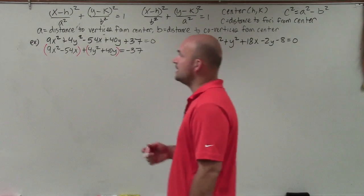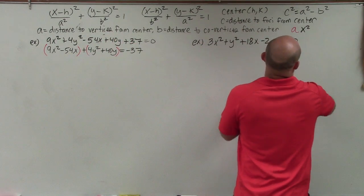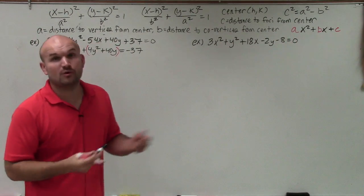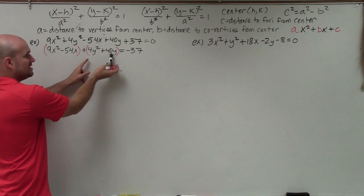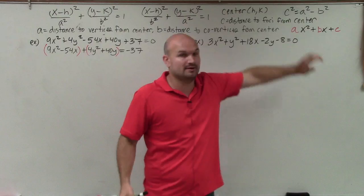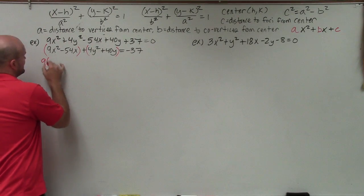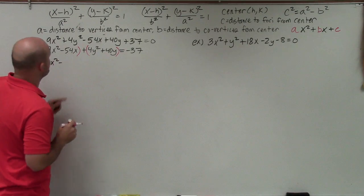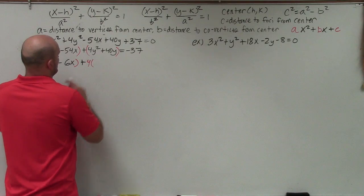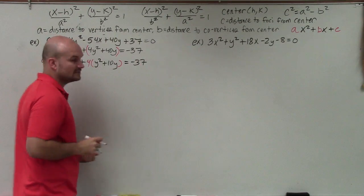Remember, for completing the square we cannot have the leading coefficient 'a' be anything other than 1 in ax² + bx + c. Inside these parentheses I have two quadratic binomials, so I need to create perfect square trinomials. The first thing I'm going to do is factor out a 9 from the x terms, leaving x² minus 6x, and factor out a 4 from the y terms, leaving y² plus 10y, equals negative 37.